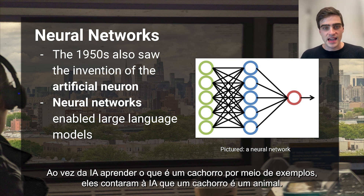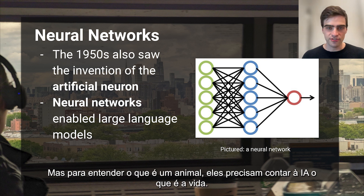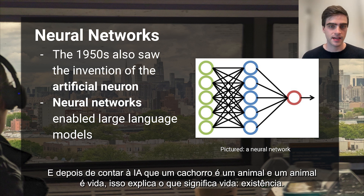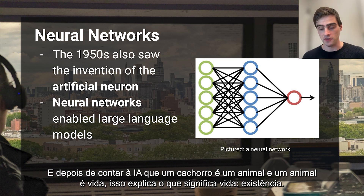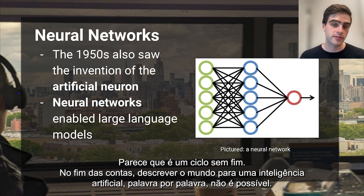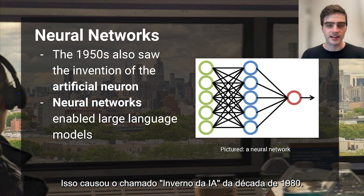Rather than the AI learning what a dog is via examples, they tell the AI a dog is an animal. But to understand what an animal is, they then have to tell the AI that it's life. And then, having told the AI that a dog is an animal and an animal is life, they have to explain what life means — existence. It's a never-ending loop. Describing the world to an AI word by word is not tractable. And when people figured this out, artificial intelligence research halted. This caused the AI winter of the 1980s.